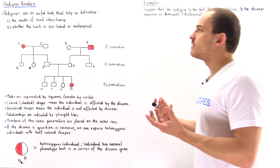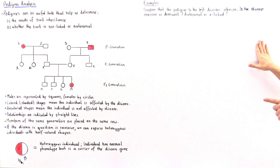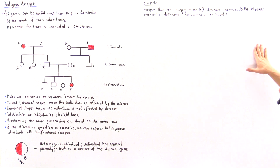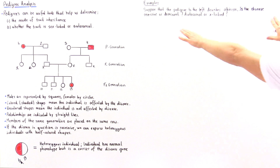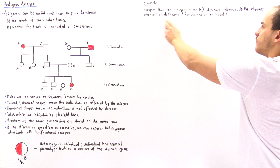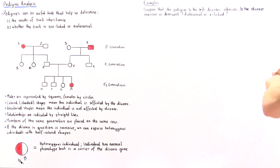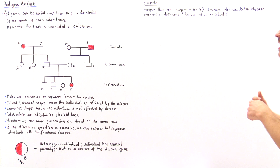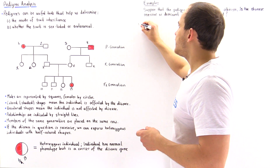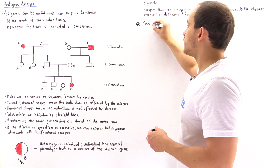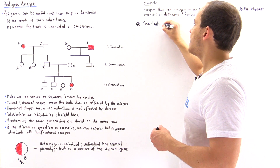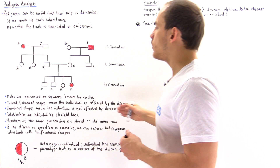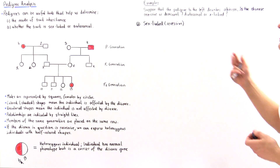To see how we can analyze a pedigree, let's look at the following example. Suppose this pedigree describes albinism. Our goal is to answer two questions: Is the disease recessive or dominant? Is it autosomal or X-linked? We solve these problems by beginning with an assumption and then checking whether the pedigree is consistent with it. Our first assumption is that the gene is sex-linked recessive.